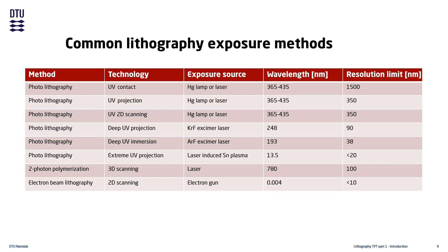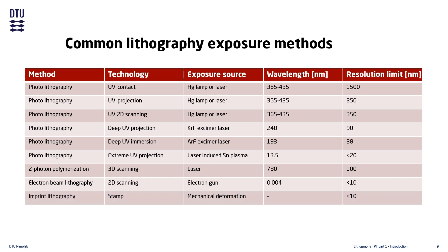The wavelength of electrons at typical acceleration voltages is three orders of magnitude smaller than the realistic resolution limit in e-beam lithography, which is why the resolution limit is not really dependent on the electron wavelength. The final method is imprint lithography, which uses a stamp to mechanically deform the resist. Since there is no radiation medium, the minimum resolution obtainable depends on the resolution of the stamp.